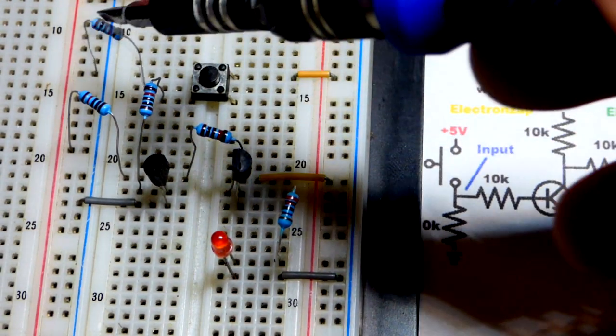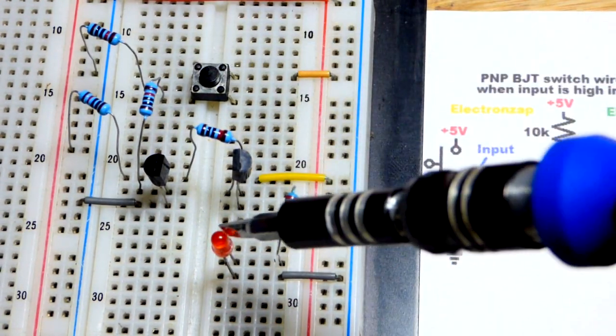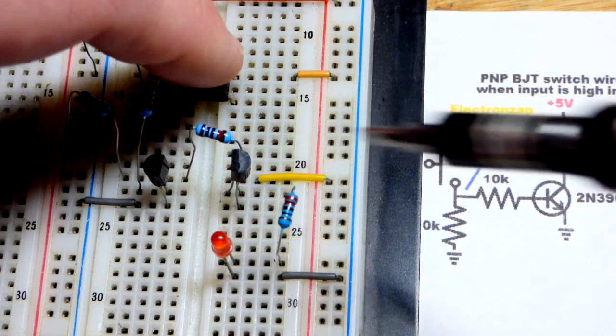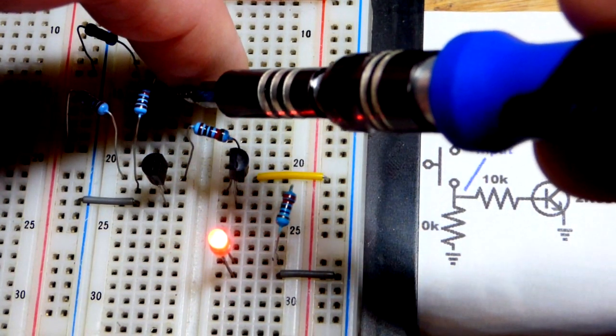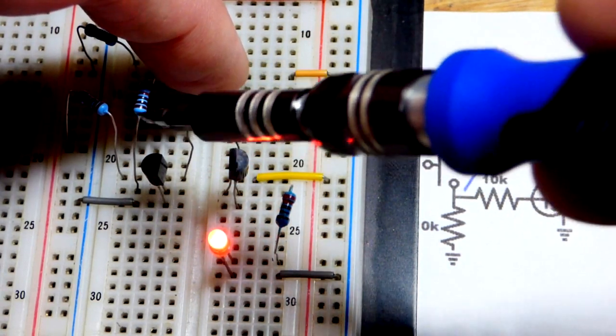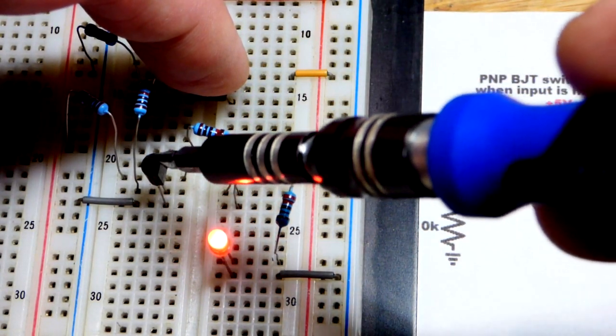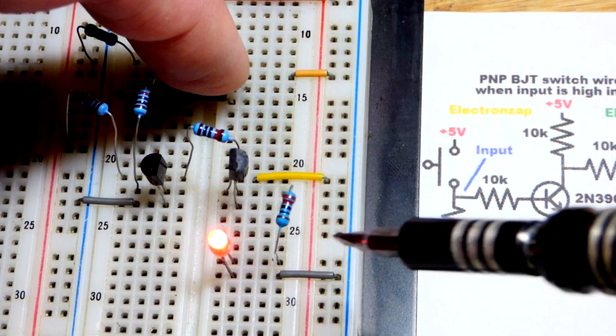So right now you can see we have a pull-down resistor, a low input, the LED is off. Even though it's a PNP bipolar junction transistor switch, if I close the switch, we have a direct connection to the positive supply there. Current limited through a resistor though, but in any case, the transistor is fully on there.